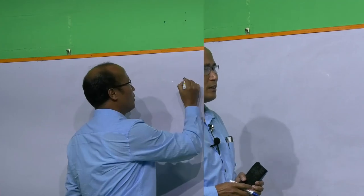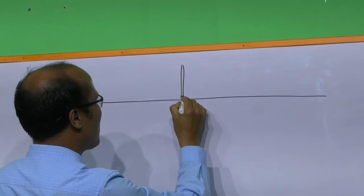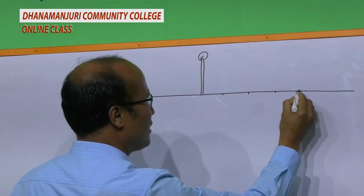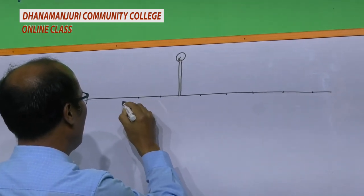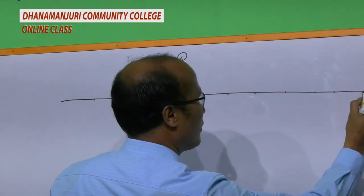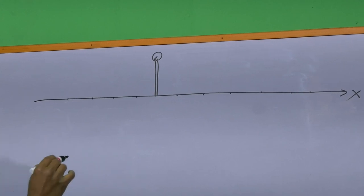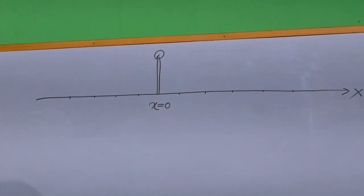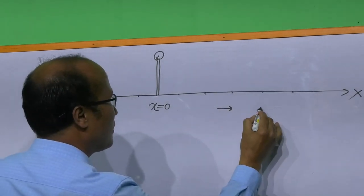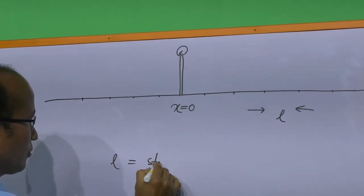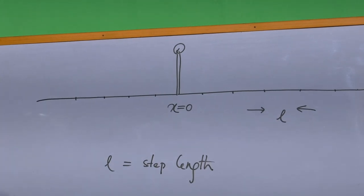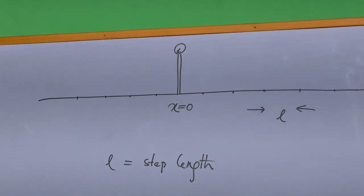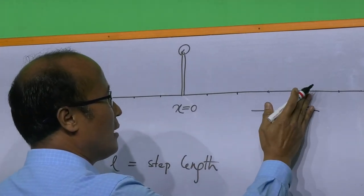In the random walk problem, we consider a drunk man who starts out from a lamppost on a street, and we assume that this man takes equal steps. That is, the step length remains constant. He is moving along the x-axis and he can move towards the right or towards the left. The motion of the man, whether towards the right or towards the left, is independent of the motion in the preceding step.